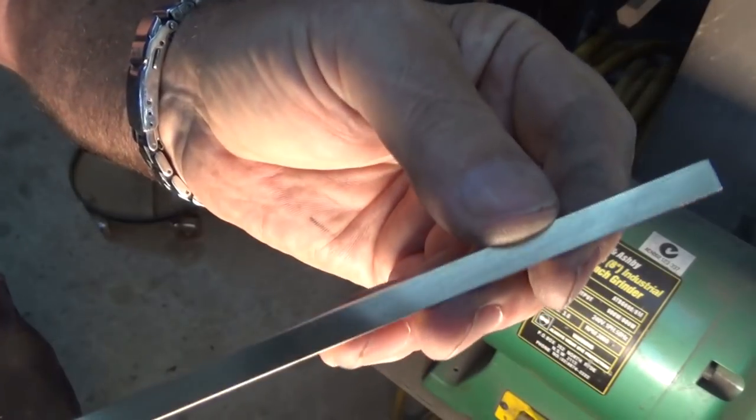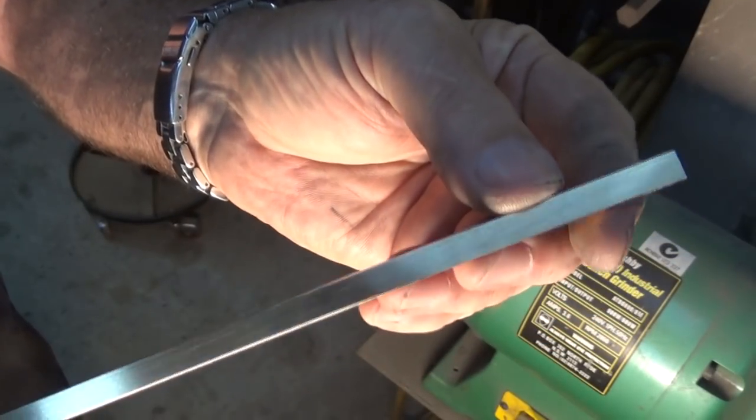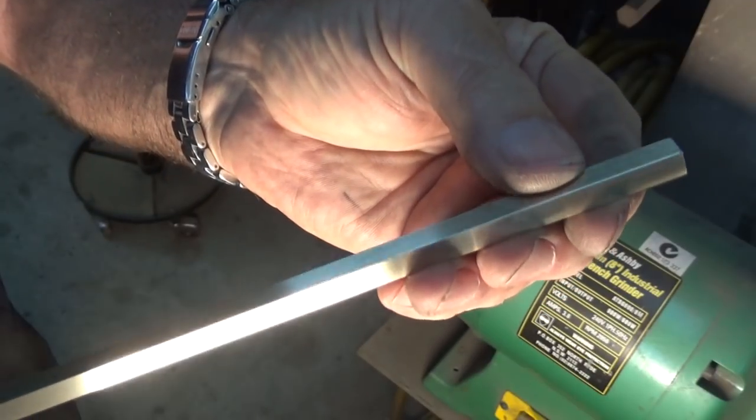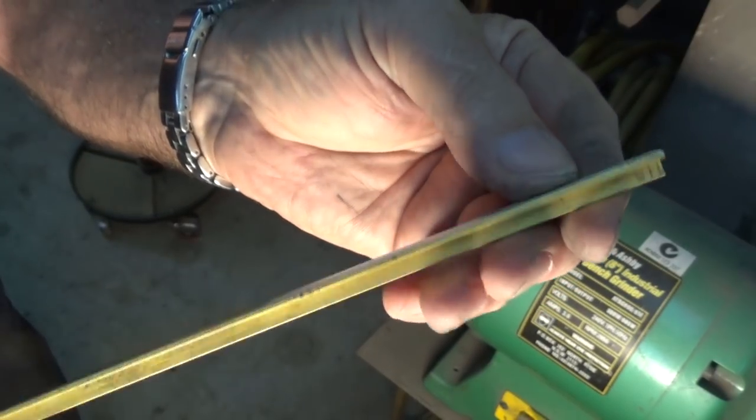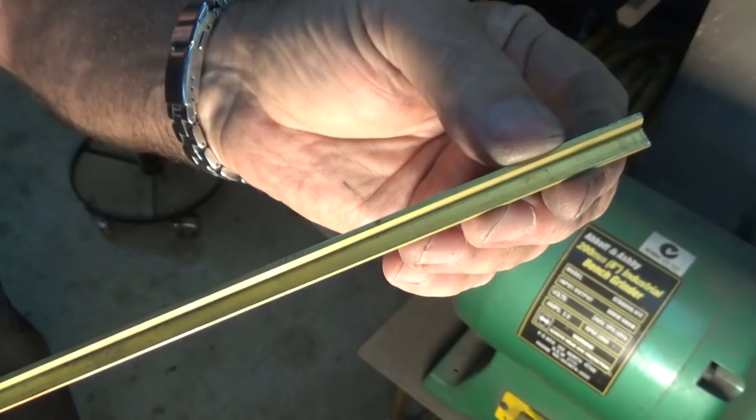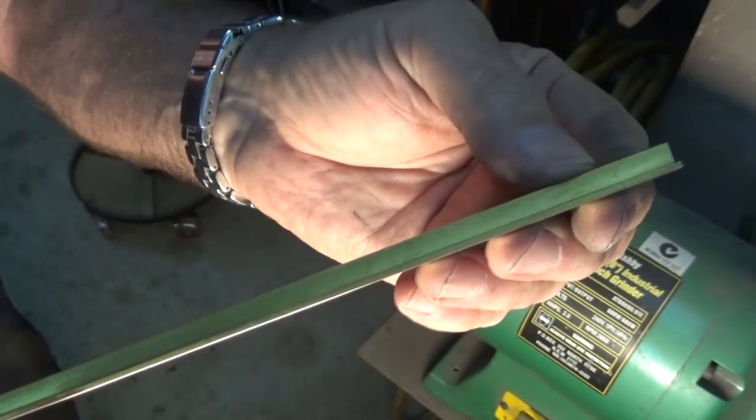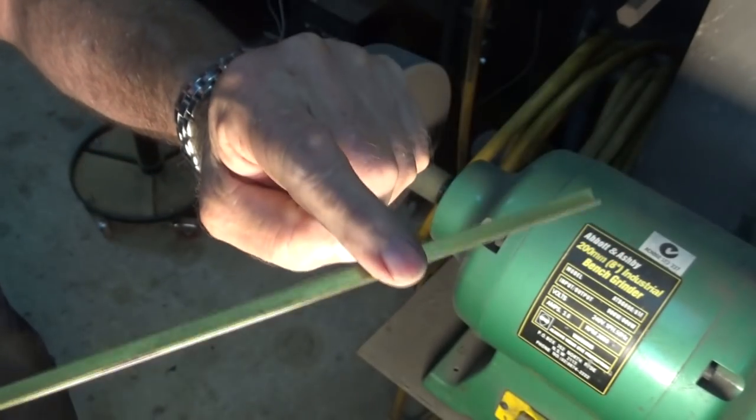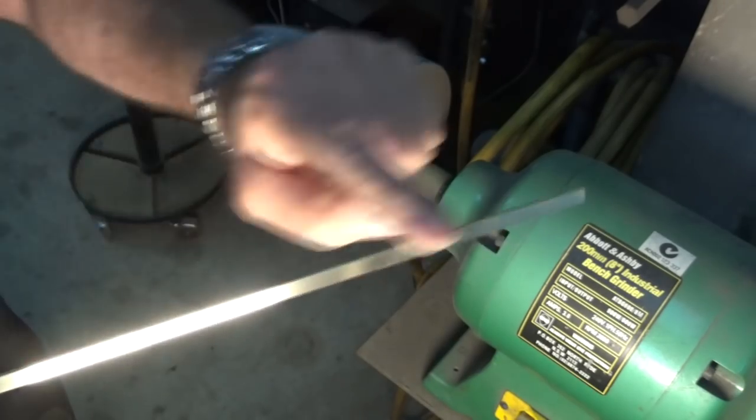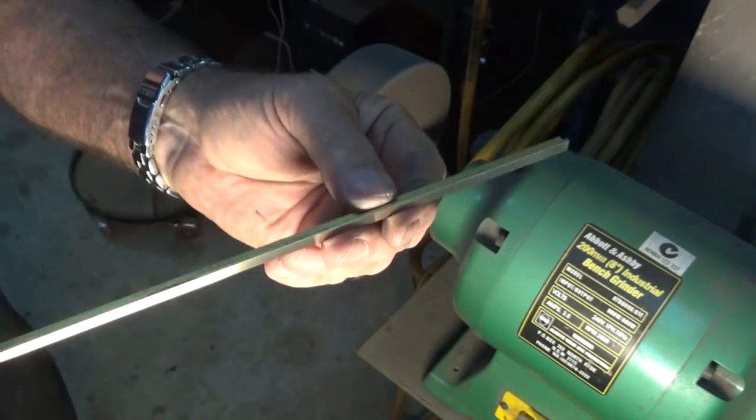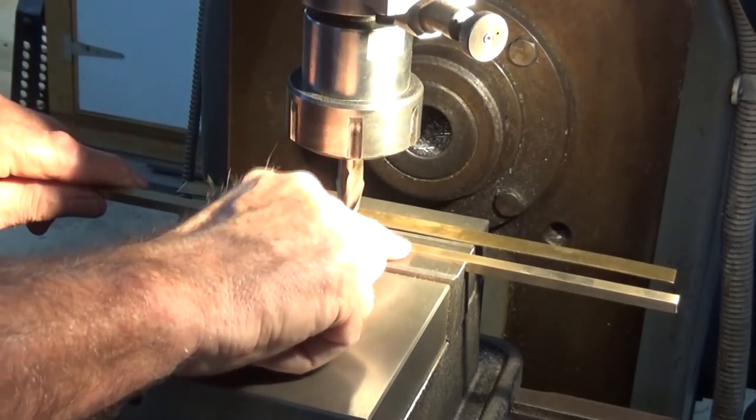Alright well that one's done and you can see the difference between the surfaces that are being treated on the outside and the inside of the angle. I'm not going to do these edges just yet because one of these has to be milled off.